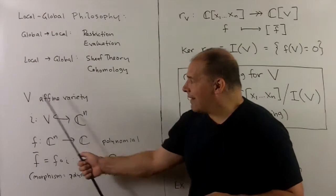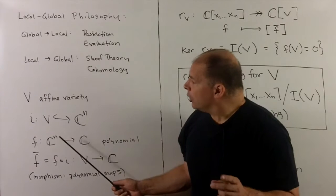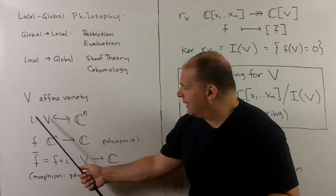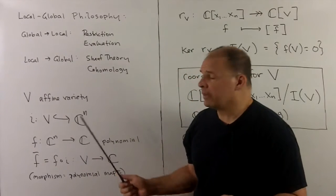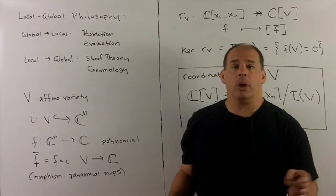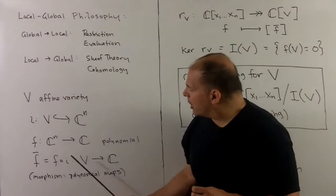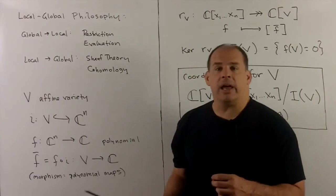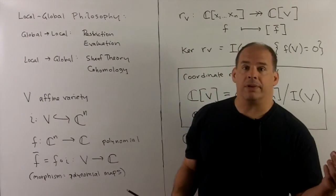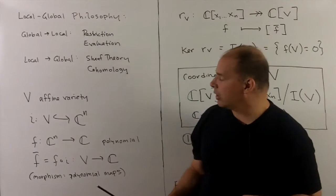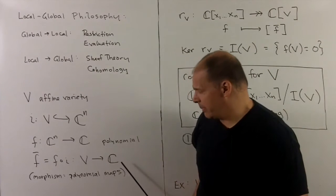So let's take a look. Let's suppose I have V, an affine variety. We have an inclusion map of V into the C^N where it lives. If I take any polynomial on C^N, say F, well, I can get a polynomial function on V just by composition. And so that's going to be our first instance of a morphism. In general, morphisms are going to be built out of these types of maps.